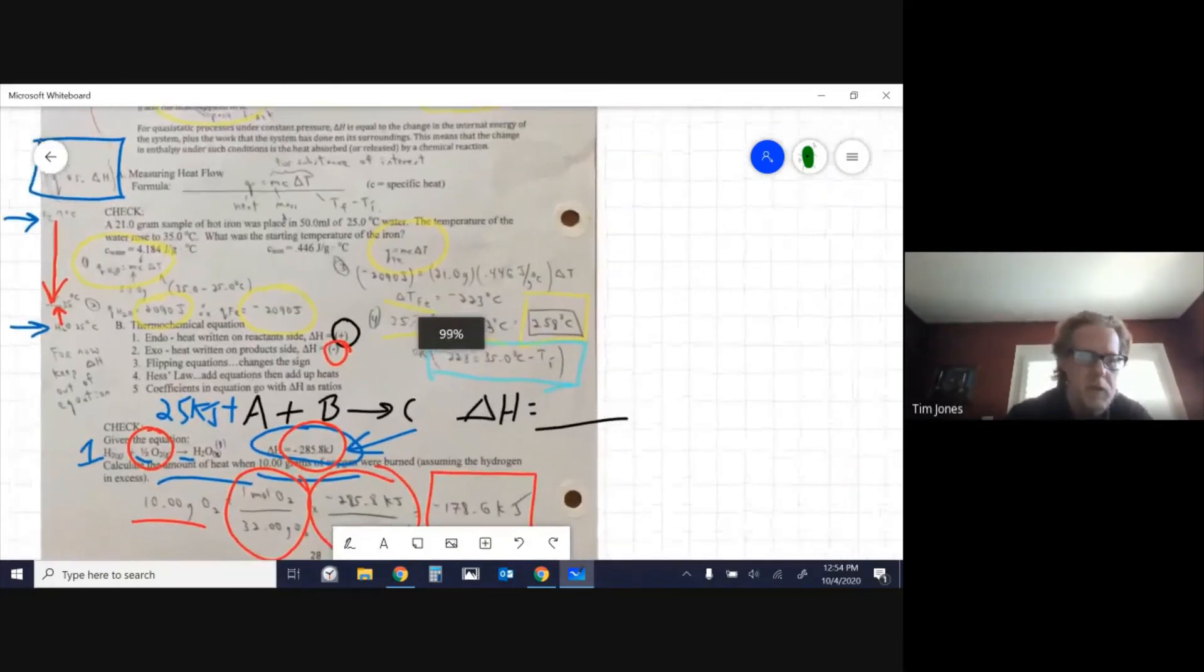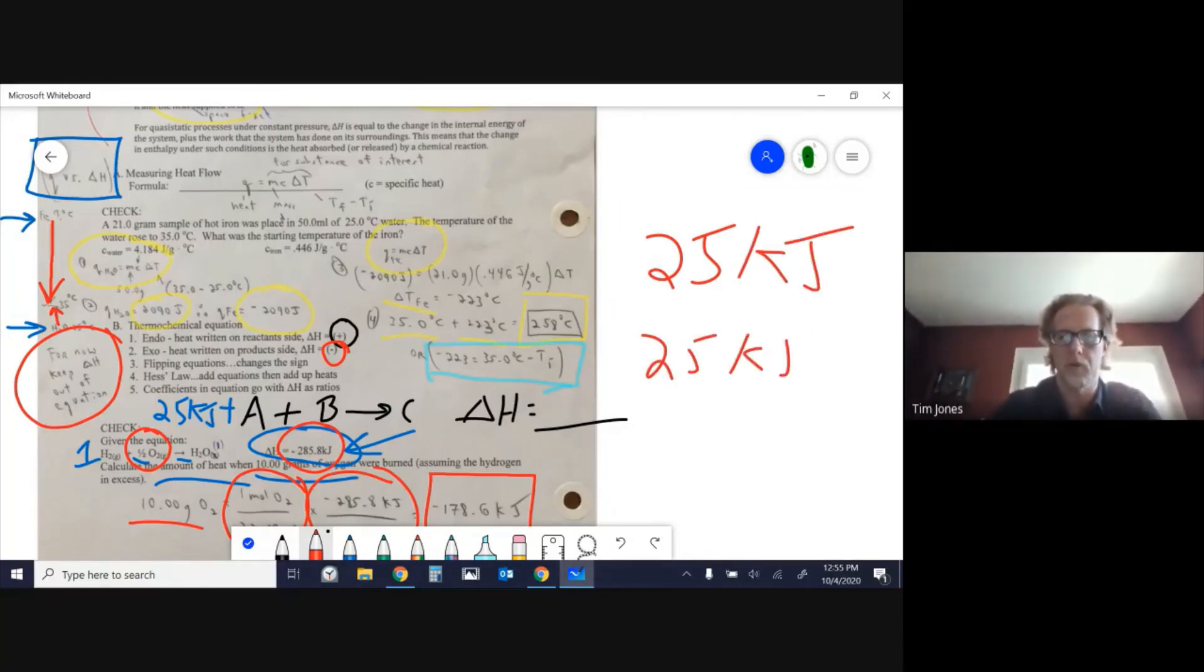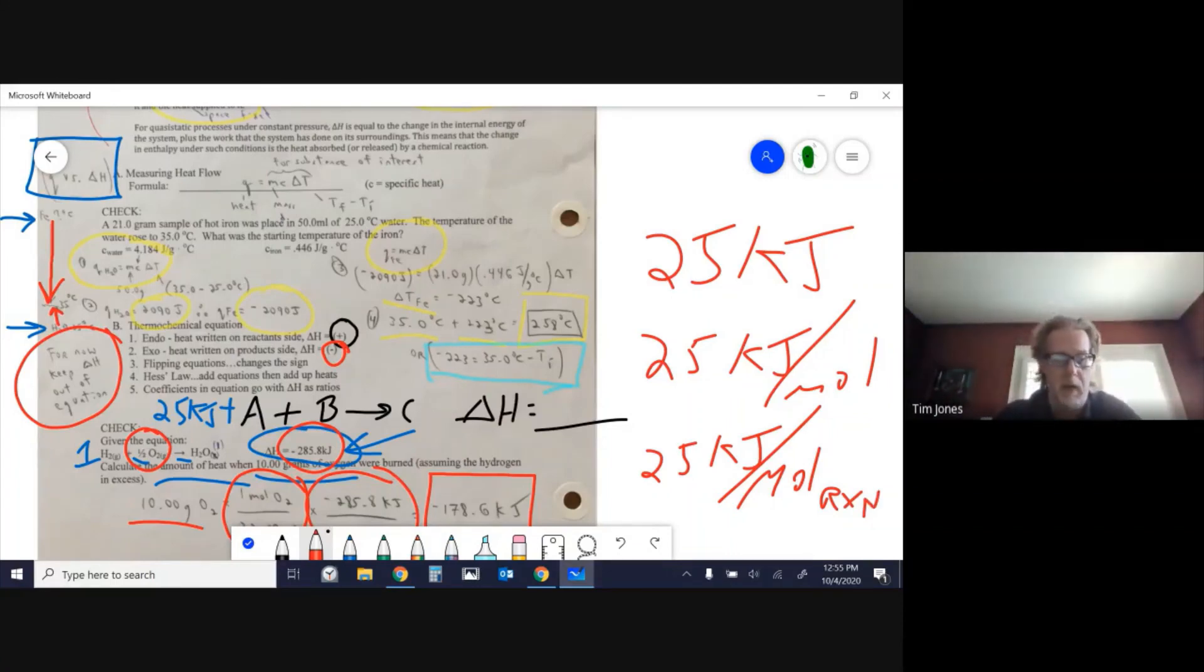I mentioned that usually I prefer to keep delta H out of the equation. I find it easiest just to write it off to the side - it's cleaner and easier to follow. Something that's going to come up in the next few lessons is whether you write 25 kilojoules or 25 kilojoules per mole or per mole based on the reaction. We'll go through how to tell which is most appropriate. That takes care of page 28.